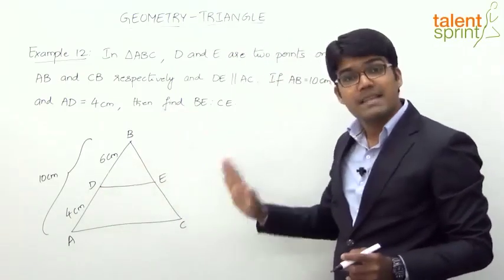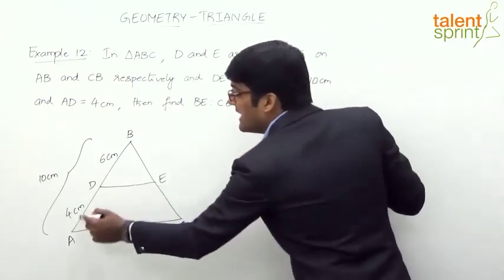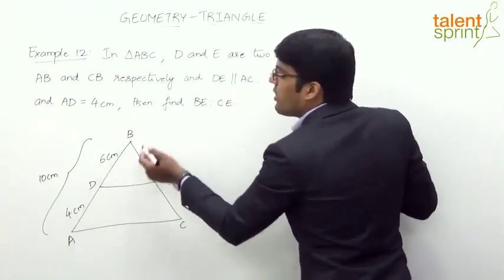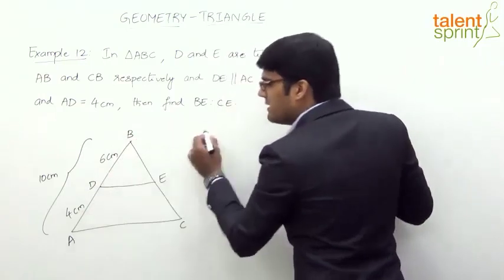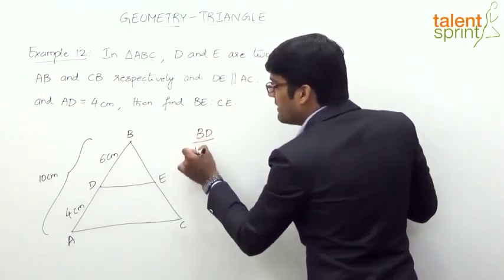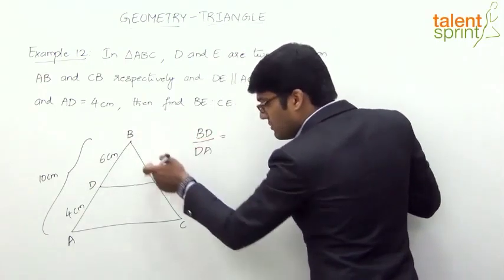then it will divide AB and CB in the same proportion, which means AD by DB or for that matter BD by DA. BD by DA should be equal to BE by EC.